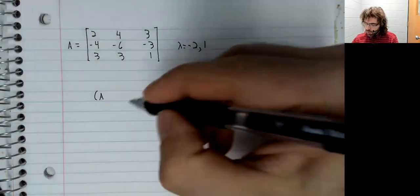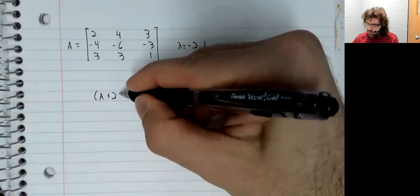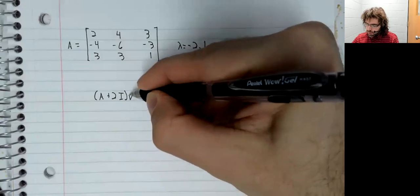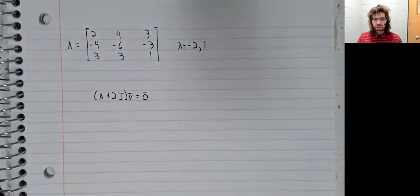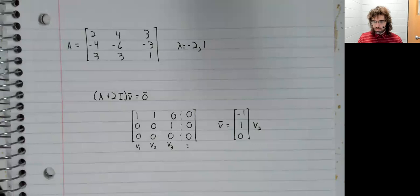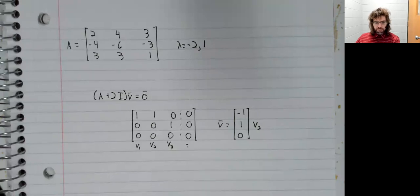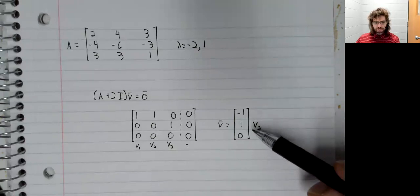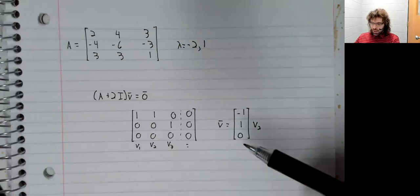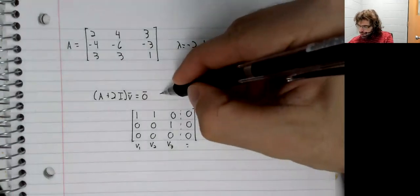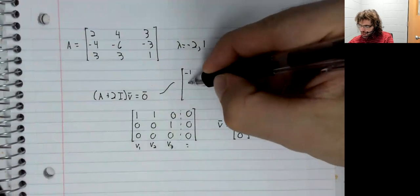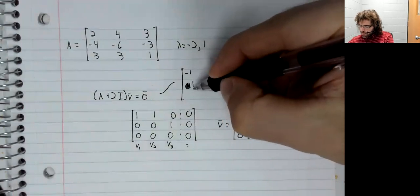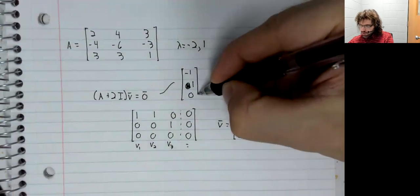And now for each eigenvalue, we'll look for eigenvectors. We'll start with negative two. We perform Gauss Jordan elimination on the appropriate matrix. We find the eigenvectors. And again, even though there are infinitely many eigenvectors, we really only get one of them.